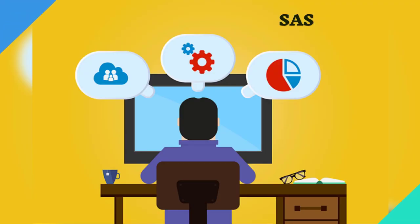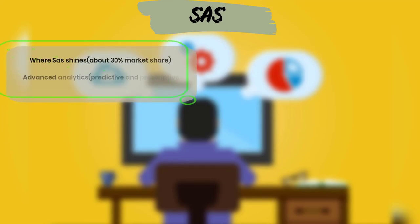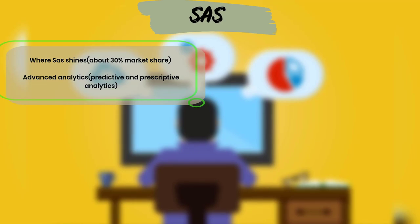Let's talk about the SAS programming language. Where SAS really shines — with about 30% market share — is advanced analytics: predictive analytics, where you employ predictive models using statistical and machine learning techniques, and prescriptive analytics, which recommends decisions using optimization, simulation, and so forth. There are also decision analytics and descriptive analytics. All four types fall under business analysis or business analytics.